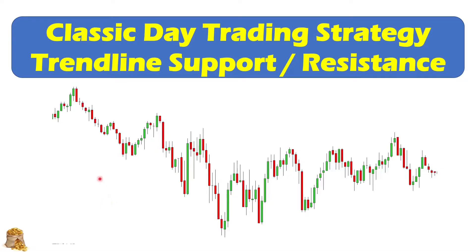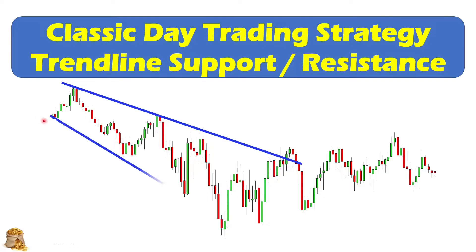Here is an example. When the market forms two highs here, we can connect them as a trendline. And then at the bottom, the same thing. When the market touches the trendline for the third time at the top here, there's a short opportunity, so we can trade down to the bottom trendline here.